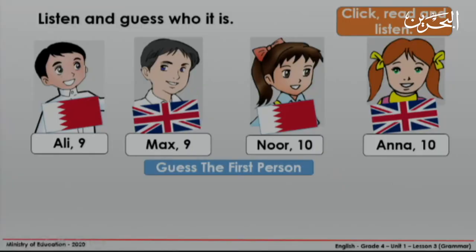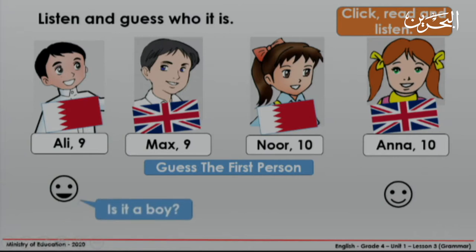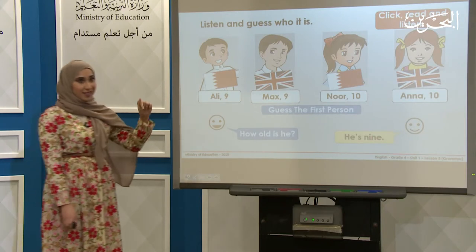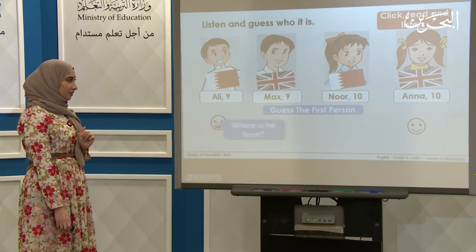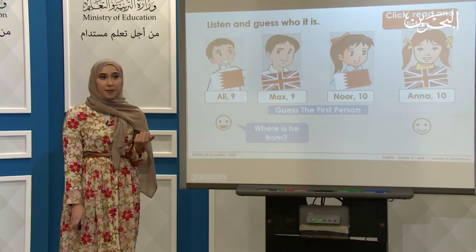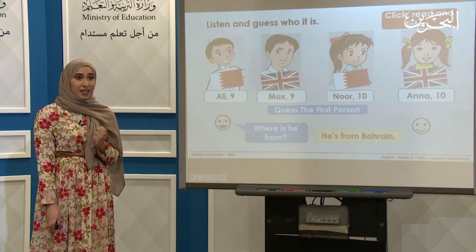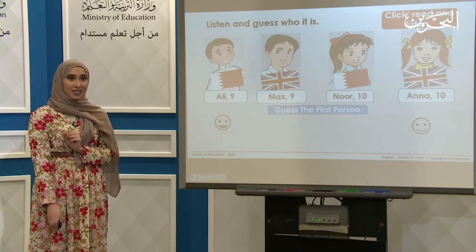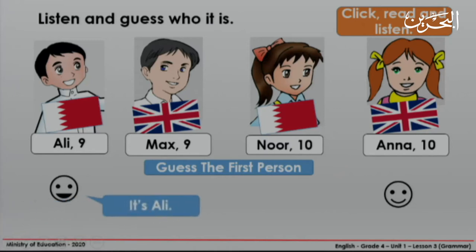I want you to guess the first person. Is it a boy? Yes, it is. How old is he? He's 9. Can you guess now? No, we have two boys. Let's see the next question. Where is he from? He's from the Kingdom of Bahrain. Now can you guess? Excellent! It's Ali.